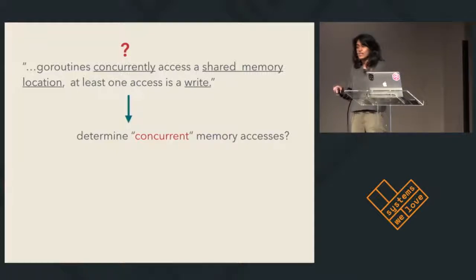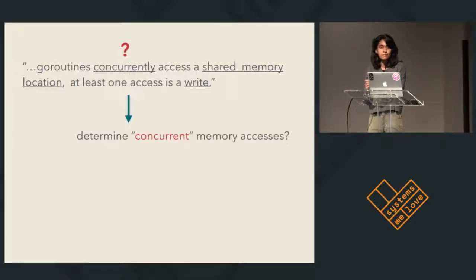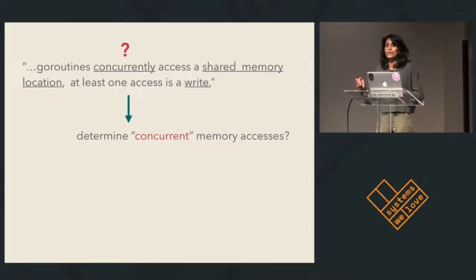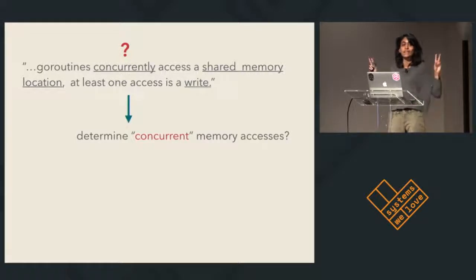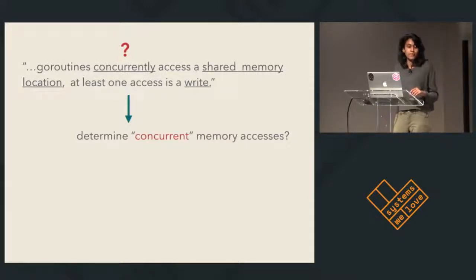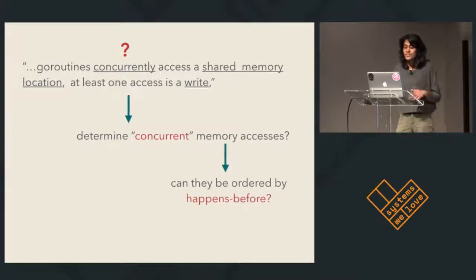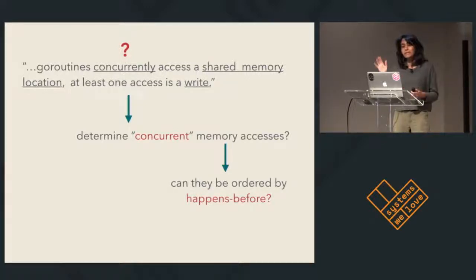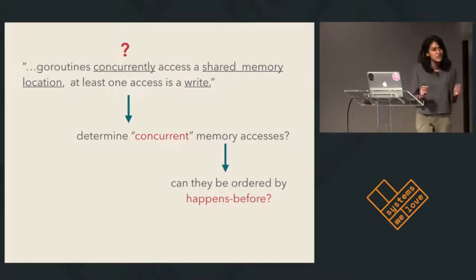Say we have two memory access events — G1's write and G2's read — I'm going to call them X and Y. Our question is: how do we know if they happen at the same time or not? Let's re-ask it: if we can conclude that we can order them — say X happened before Y or Y happened before X — then we can conclude they didn't happen at the same time. Conversely, if we can't establish that ordering between them, they could have happened at the same time. So re-asking the question: can X and Y be ordered by happens-before? Happens-before sounds awfully familiar — you've probably seen it in the context of distributed systems. Leslie Lamport came up with this idea of happens-before, causal ordering.